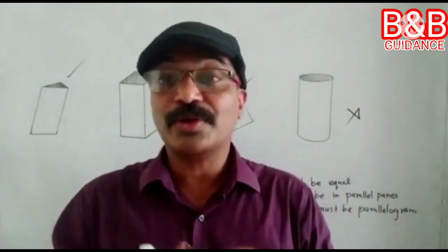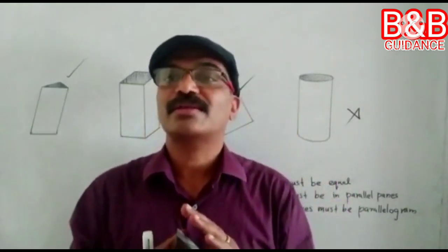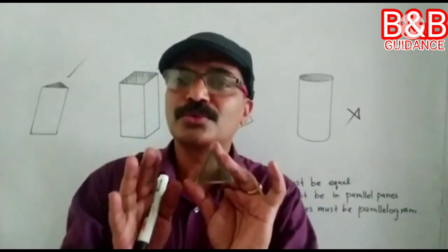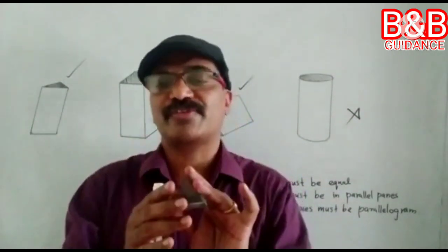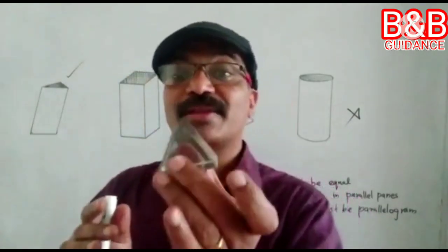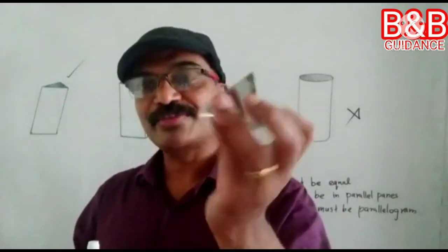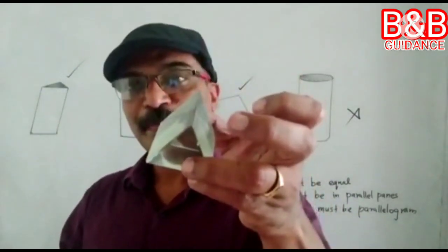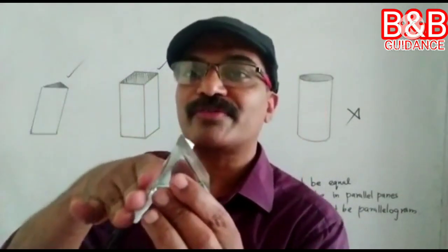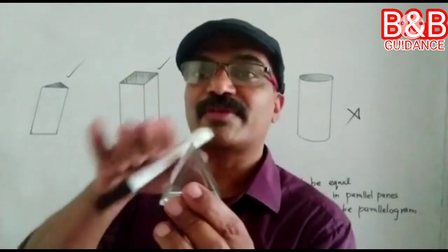In physics, which we are going to discuss in this chapter, when I say prism, you will understand: a transparent refracting medium, bounded by two plane surfaces inclined to each other. This one is a refracting medium — transparent refracting medium. Bounded by two plane surfaces: this is one surface, and this is another surface. This is a plane surface, not curved.